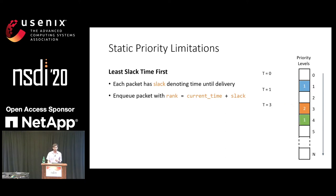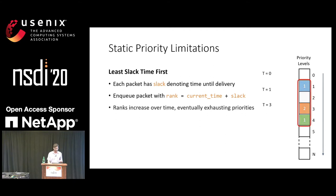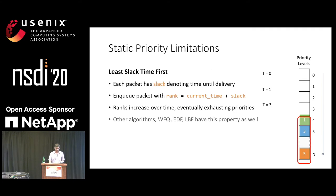The intuition is: if you have two packets that arrive at the same time, you dequeue the packet with the smaller slack first; and if you have two packets with the same slack, you dequeue the one that arrived earlier. As you can realize, the ranks gradually increase over time. As packets are dequeued and new packets are enqueued, the window of packet ranks gradually increases until you exhaust the priority levels you have. This is not just common to least slack time — other algorithms such as fair queuing, earliest deadline first, or even a work-conserving algorithm such as leaky bucket filter have this property as well.